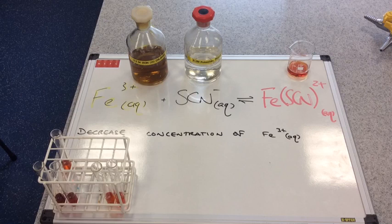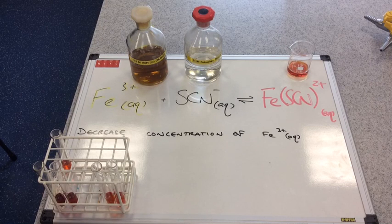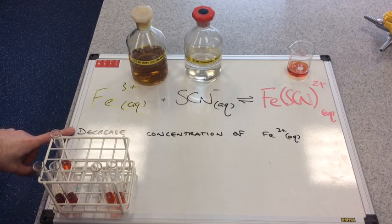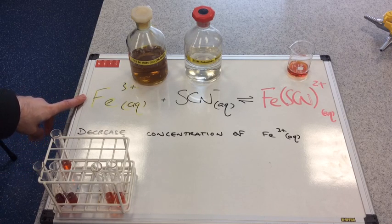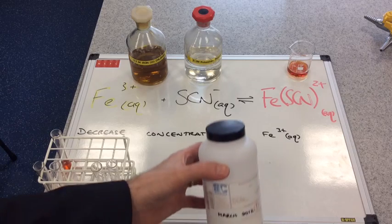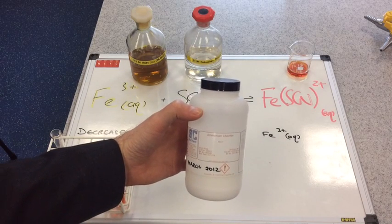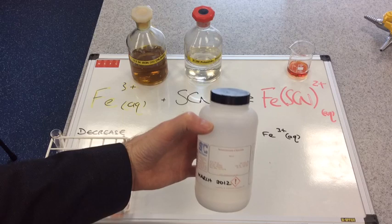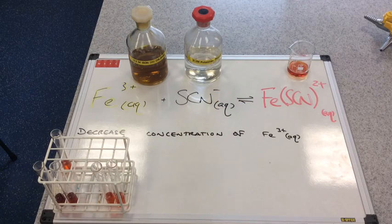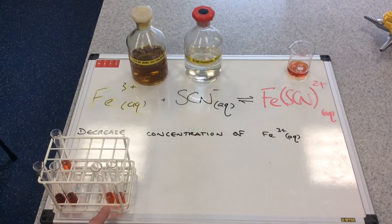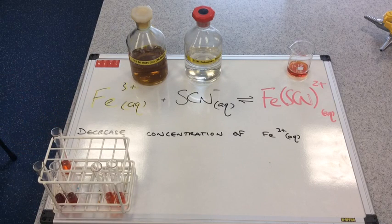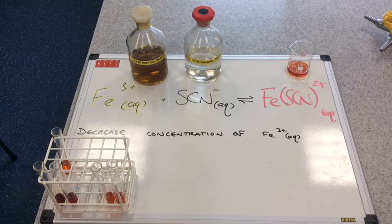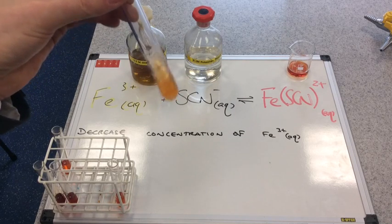The next change I'm going to make to the equilibrium is I'm going to decrease the concentration of iron 3 plus. And I'm going to do that by adding a chemical called ammonium chloride. So I'm going to add a spatula of ammonium chloride to one of my remaining two test tubes. There's the control, still the same as before. And we'll see what happens to the color of the test tube.